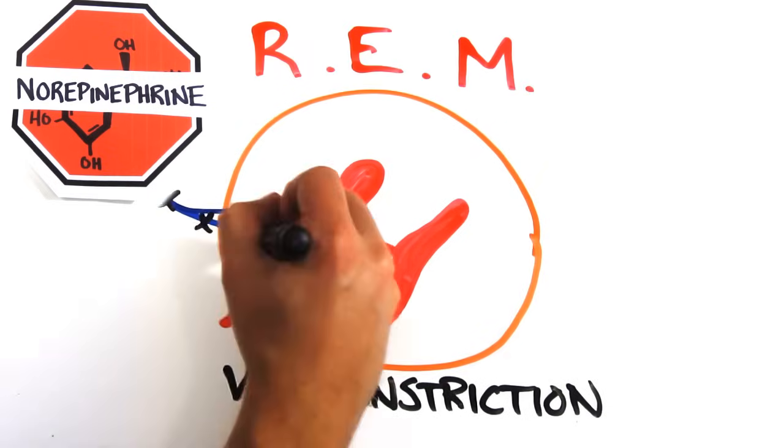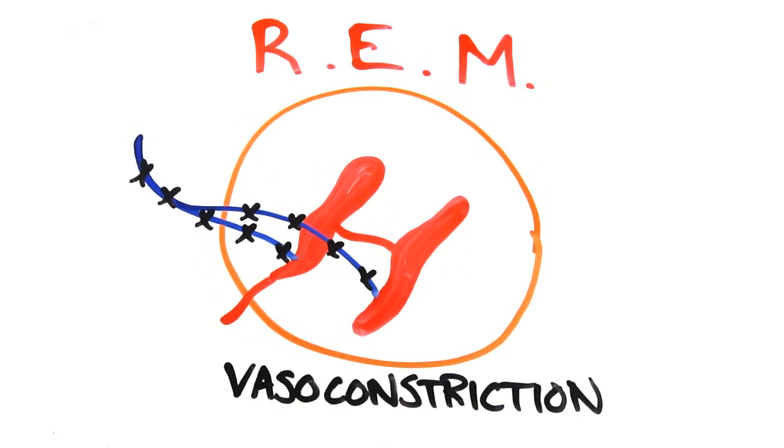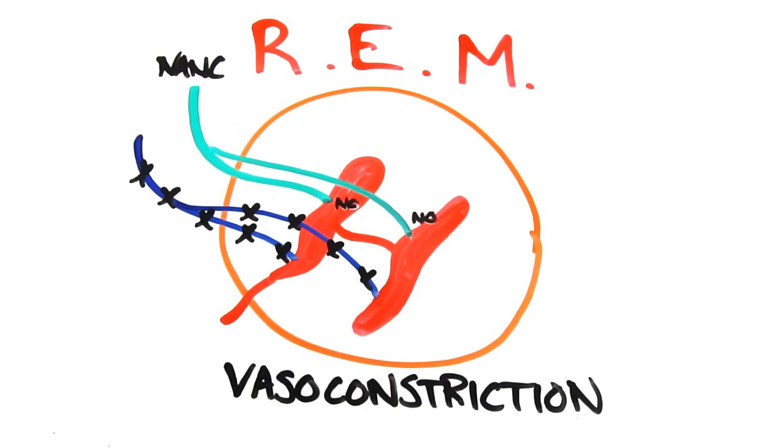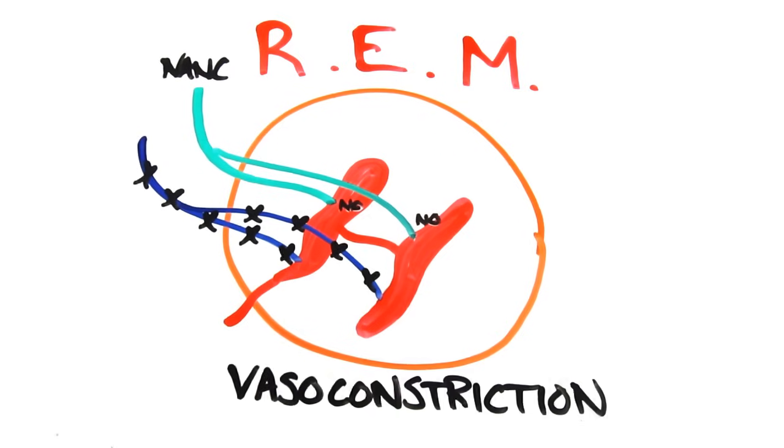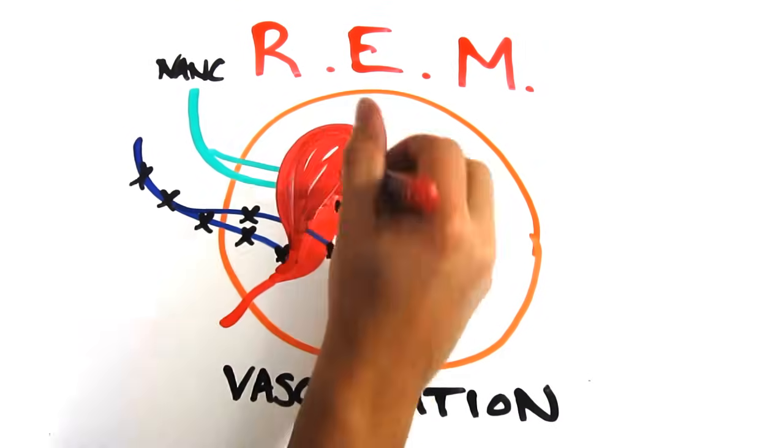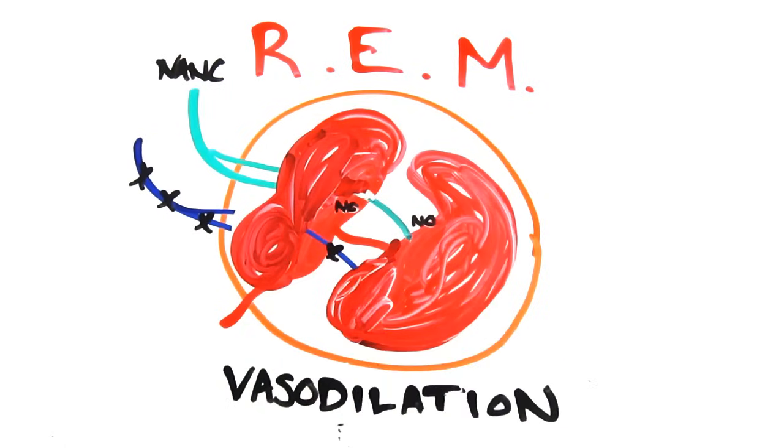But as you enter REM sleep, norepinephrine decreases and testosterone-related actions are now able to take place. This leads to vasodilation, or increased blood flow to the blood vessels, ultimately causing an erection.